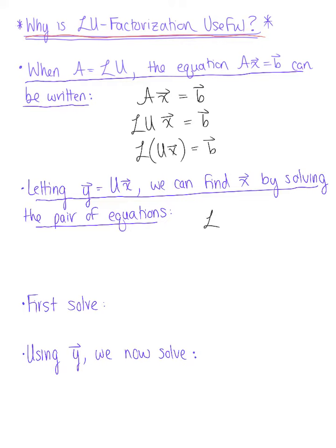We have matrix L times vector Y equals vector B as our first equation. And our second equation is the upper triangular matrix U times vector X equals vector Y.